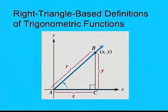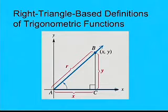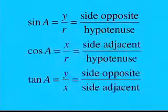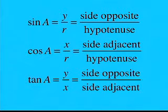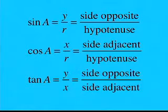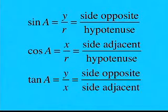Using this triangle we have an angle in standard position. We have our values x and y, which represent the point (x, y) on the terminal side, and we have the hypotenuse of the right triangle as r, the distance from the origin to the point (x, y). The sine of angle A is y over r, but for the right triangle it's the side opposite over the hypotenuse. For the cosine of angle A it's the side adjacent over the hypotenuse, and for the tangent of A it's the ratio of the side opposite to the side adjacent.